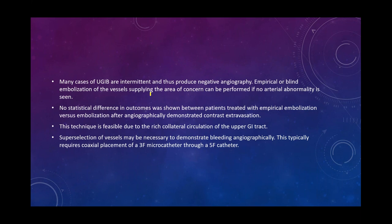Often, the upper GI bleed is not identified on angiography due to intermittent bleeding, resulting in a negative study even with a symptomatic, hemoglobin-dropping patient. Importantly, studies demonstrate no statistical difference in outcomes between patients treated empirically versus those embolized only after angiographically demonstrating contrast extravasation. This means if a location is highly suspected for a bleed but you don't demonstrate definite contrast extravasation, empiric embolization may still help the patient.